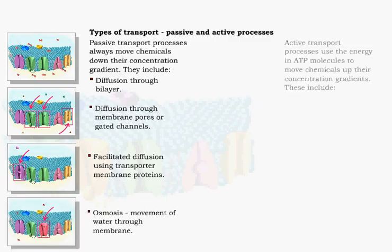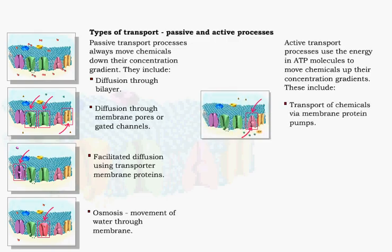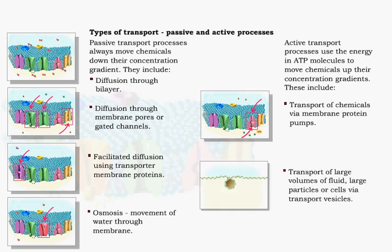Active transport processes use energy from ATP to move molecules. They include transport of chemicals across the membrane using protein pumps, and transport of large volumes of fluid, large particles, or cells via transport vesicles.